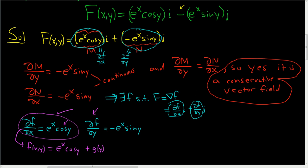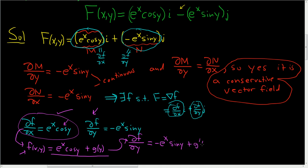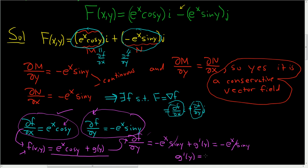Now we have to use the second condition. We compute ∂f/∂y of our result: the derivative of cosine is negative sine, giving negative e to the x sine y, plus g prime of y. Setting this equal to negative e to the x sine y, the terms cancel, leaving g prime of y equals 0. Therefore, g of y equals a constant k.